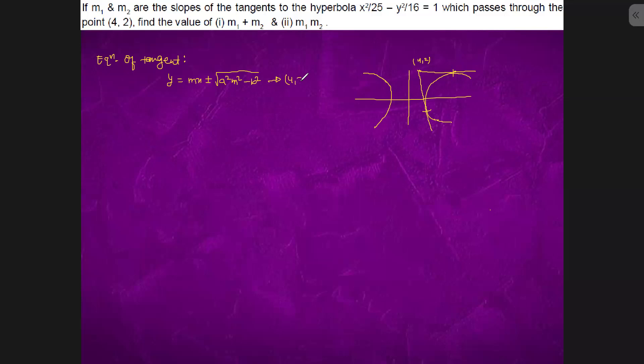four comma two. So it is two minus four m whole square equals to a square m square minus b square.